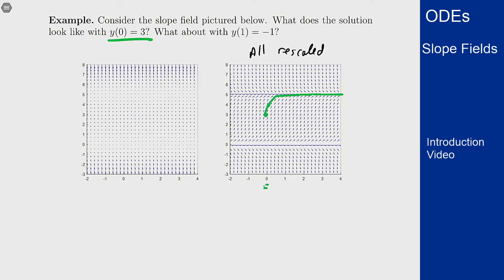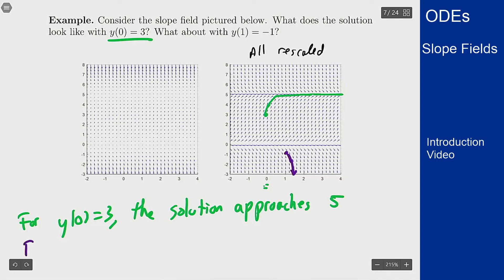What about if y(1) is negative 1? I can again go to y(1) is negative 1, something like this. Based on the arrows it's just going to take off down this way. So what I would say is for y(0) equals 3 the solution approaches 5 and for y(1) equals minus 1 the solution goes to minus infinity.